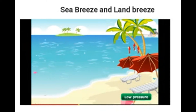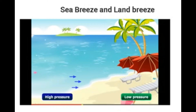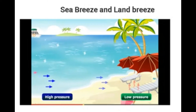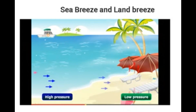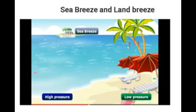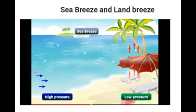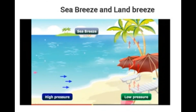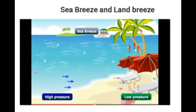Air from the seas and oceans blows towards the land to occupy this space, and this blowing air is what we call a sea breeze. Now this sea breeze brings cold air from the sea, so it reduces the temperature of the surrounding area.